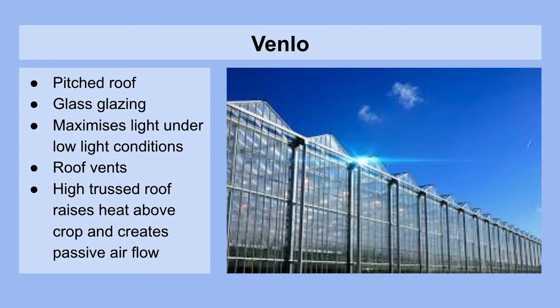Next we take a look at Venlo or Dutch style greenhouses. They're very similar to A-frames, although proportionally the side walls are much, much higher. They comprise a pitched roof and are generally glazed with glass because they want to let in as much light as possible at high latitudes. The roof vents passively allow the hot air to leave the greenhouse when opened in a controlled fashion. The high truss roof raises heat above the crop and creates passive airflow through natural thermodynamics, which can decrease the cost of circulation within the greenhouse.